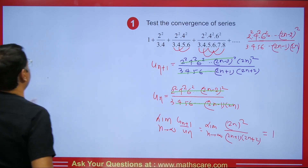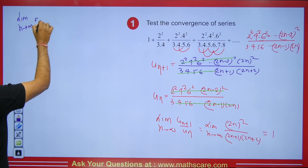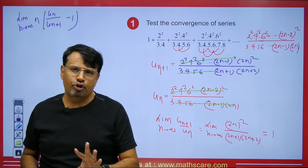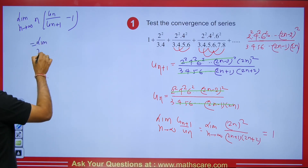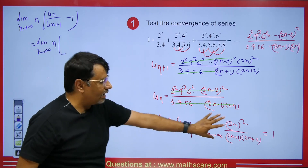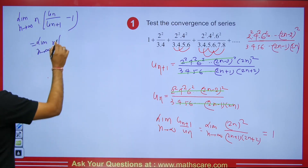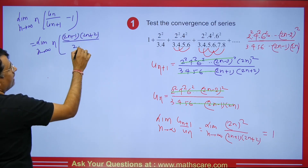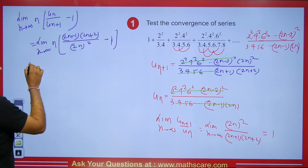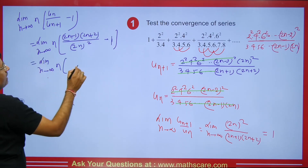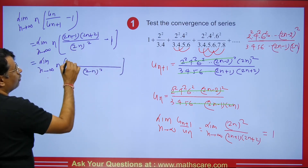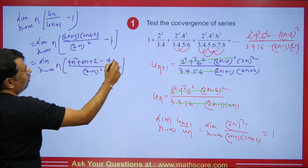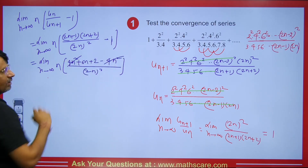Raabe's Test: limit as n tends to infinity of n(u_n/u_{n+1} − 1). Inverting u_{n+1}/u_n gives (2n+1)(2n+2) / (2n)² minus 1. Expanding: 4n² + 6n + 2 in the numerator, minus 4n² in the denominator — so 4n² cancels. The highest degree terms cancel, which is what we want.